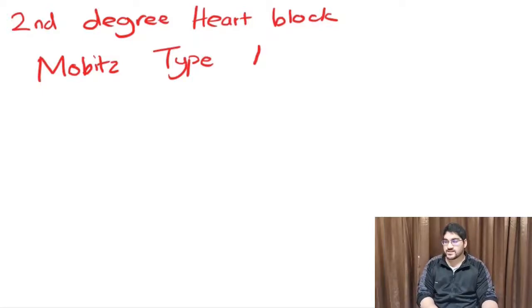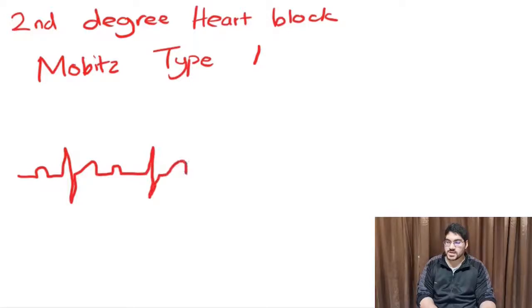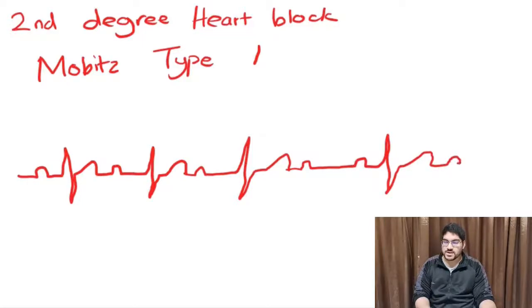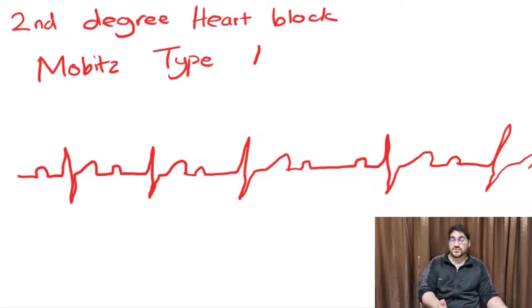Mobitz type 1 is still like being stuck at a roadblock, but every car that goes by, the cops get more and more annoyed, so they keep you longer and longer. The P-R interval keeps on getting progressively longer until all of a sudden there's no QRS complex, just another P wave. And then the pattern starts over. They start keeping you longer and longer until eventually someone doesn't make it through and they get pulled over. That's Mobitz type 1, that's Wenckebach.